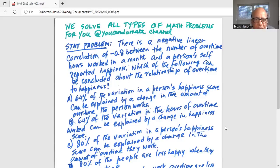Okay. So alternative A, 64% of the variation in a person's happiness score can be explained by a change in the amount of overtime the person works.